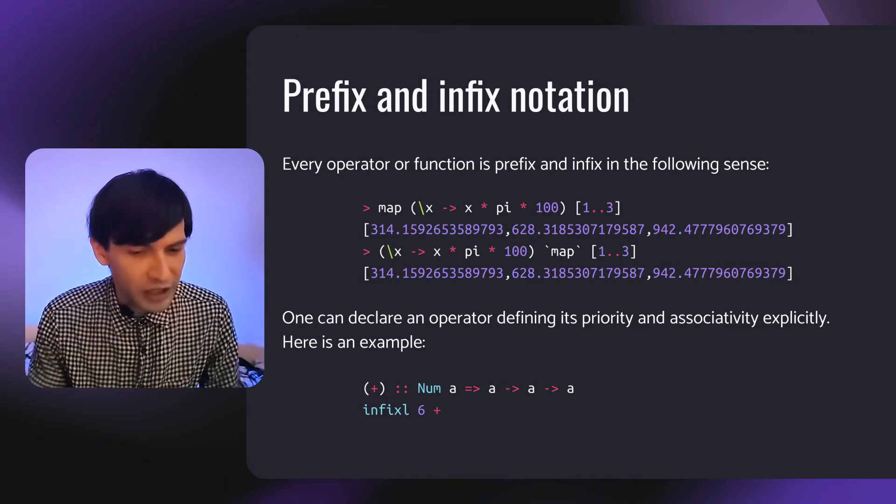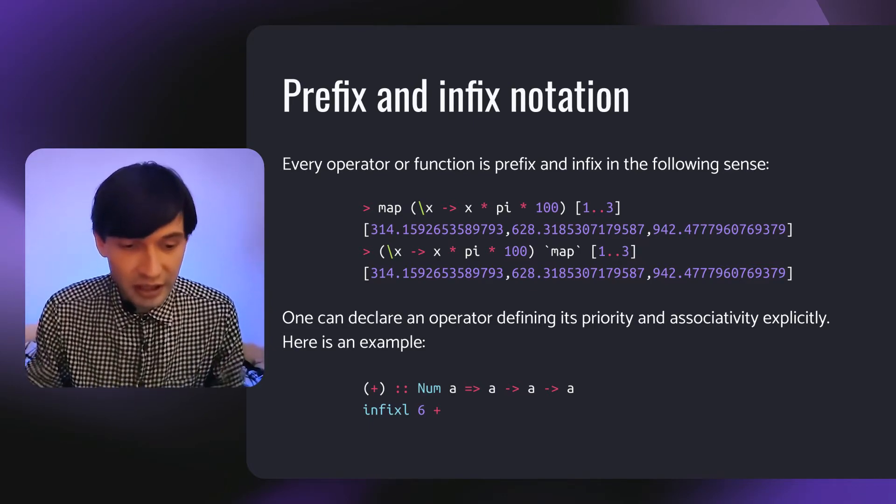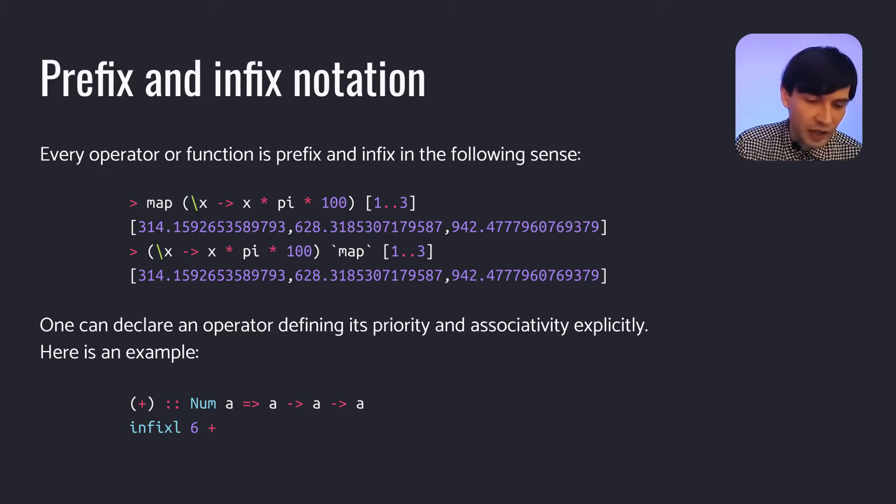one can declare an operator by defining its priority and associativity explicitly. For example, let's have a look at the plus function standard arithmetic addition. And here we declare its associativity and priority. This function has the sixth priority and its left associative. That is, x plus y plus z is the same as x plus y in brackets plus z. And the associativity declaration also allows one to avoid brackets overusing. And this is it.